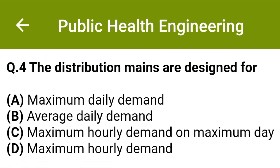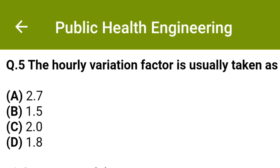The distribution mains are designed for: option A: maximum daily demand, option B: average daily demand, option C: maximum hourly demand on maximum day, option D: maximum hourly demand. The correct answer is option C: maximum hourly demand on maximum day. The hourly variation factor is usually taken as: option A: 2.7, option B: 1.5, option C: 2.0, option D: 1.8. The correct answer is option B: 1.5.